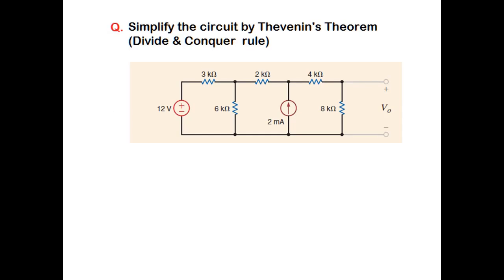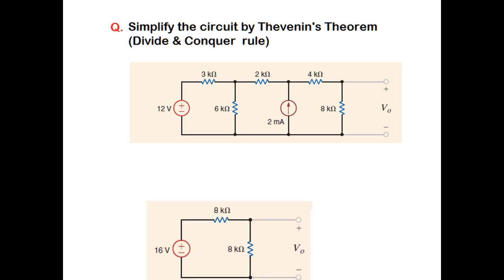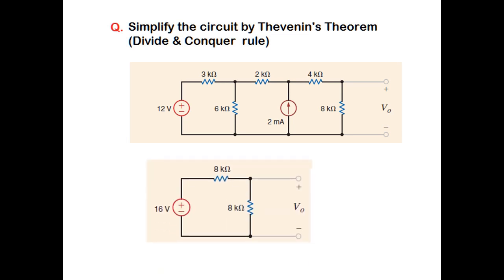Now here is a test for you: find the output voltage V0 using the divide and conquer rule of Thevenin's theorem. Your answer should be a simplified circuit — convert all parts step by step, then connect the 8 kilohm resistor and use a simple KVL method to find the voltage V0.